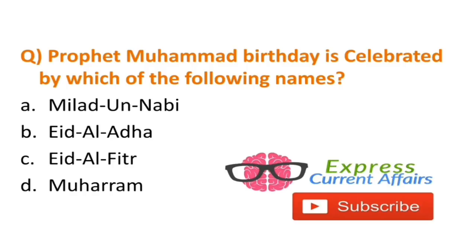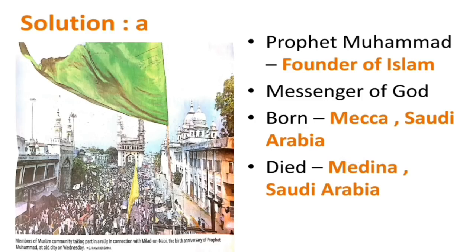Learn all important minority religious community festivals — Muslims, Sikhs, Christians, Buddhists, Parsis, and Jains. Eid al-Adha is the festival of sacrifice, honoring Ibrahim's willingness to sacrifice his son in obedience to God. Eid al-Fitr marks the end of Ramadan fasting. Muharram commemorates the martyrdom of Hussain ibn Ali, grandson of Mohammad, in the Battle of Karbala — on this day Muslims mourn and refrain from joyous events. Remember these for exam purposes.